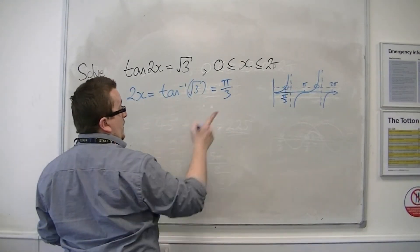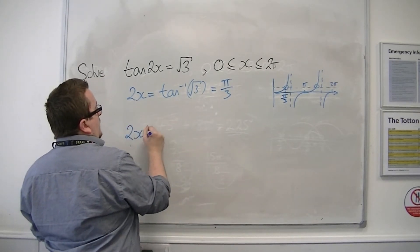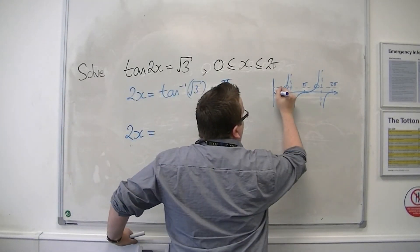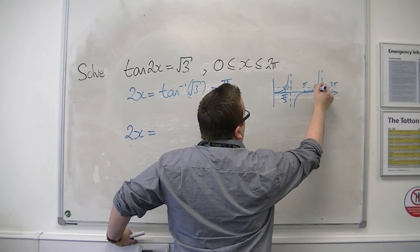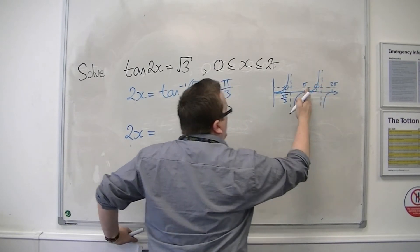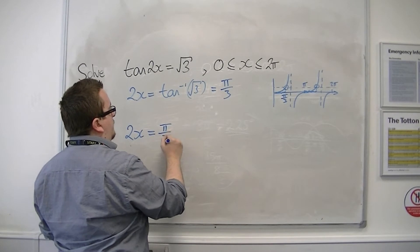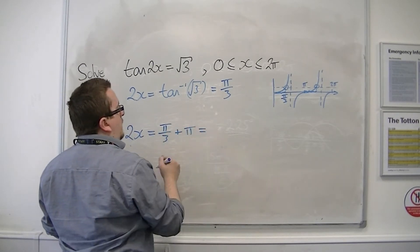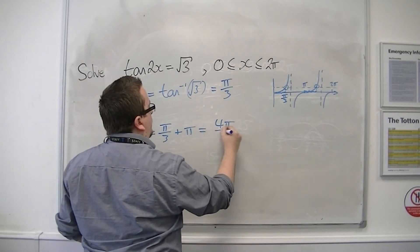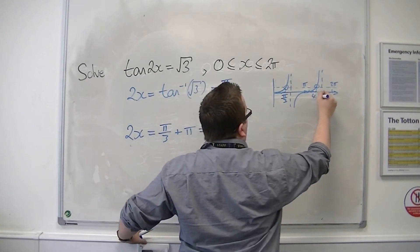Now, the second solution I can see there. If that gap is pi over 3, then this gap must also be pi over 3. And so I can add pi to pi over 3, which gets to be 4 pi over 3. So that's 4 pi over 3 there.